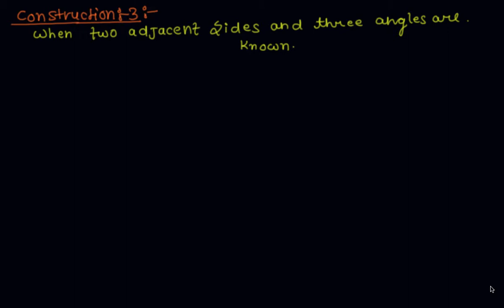Hi, this is Pratyanshu. Today I discuss Construction 3, in which two adjacent sides — meaning two nearby or continuous sides — and three angles are known. Before starting this construction, I will take an example.